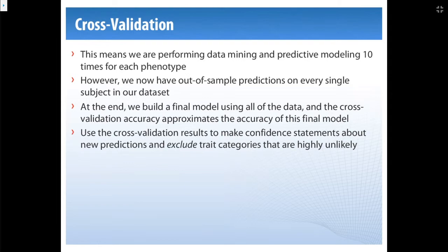We're performing the data mining and predictive modeling 10 times for each phenotype. At the end, we've made predictions on 3,000 people and know exactly how accurate this model is across people with different traits — what a prediction looks like for someone with blue eyes versus brown eyes. We can use that to make confidence statements when we make a new prediction and even exclude categories that are extremely unlikely, which can be very valuable for law enforcement.